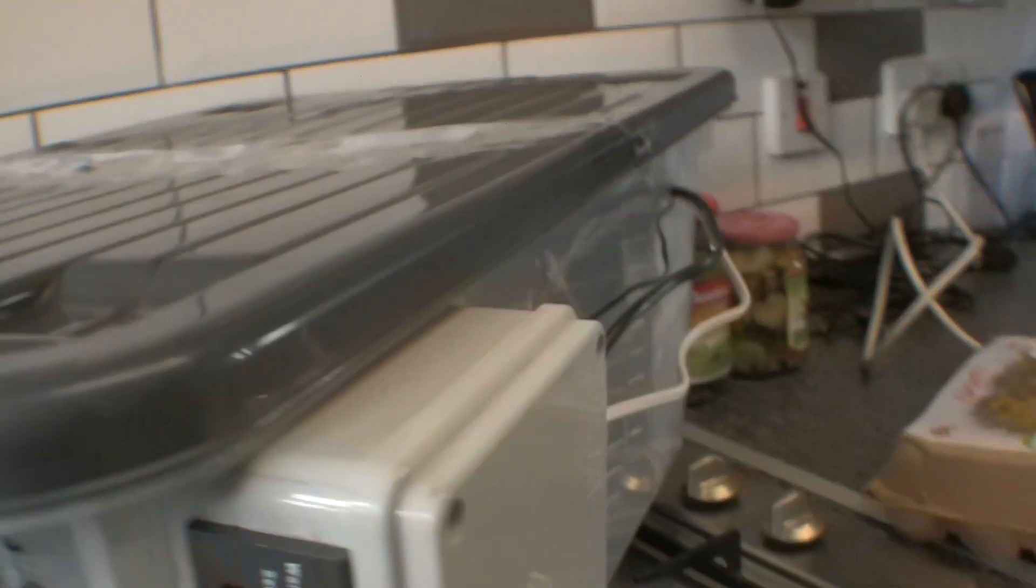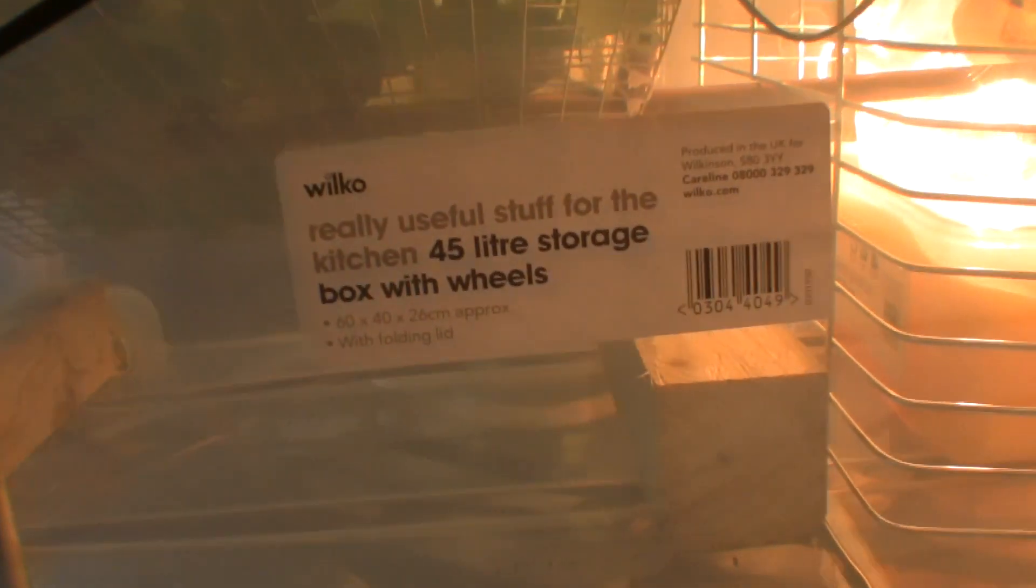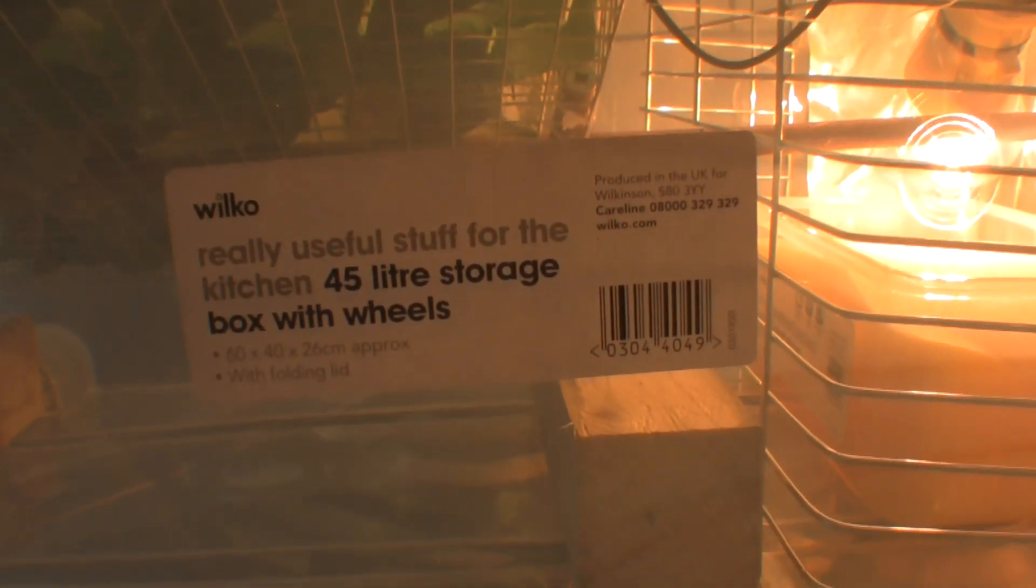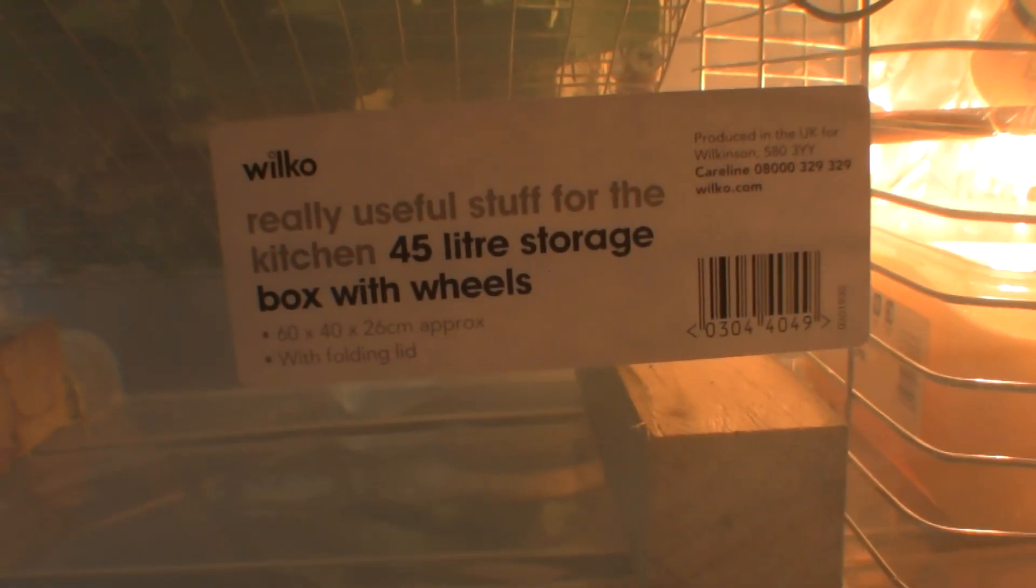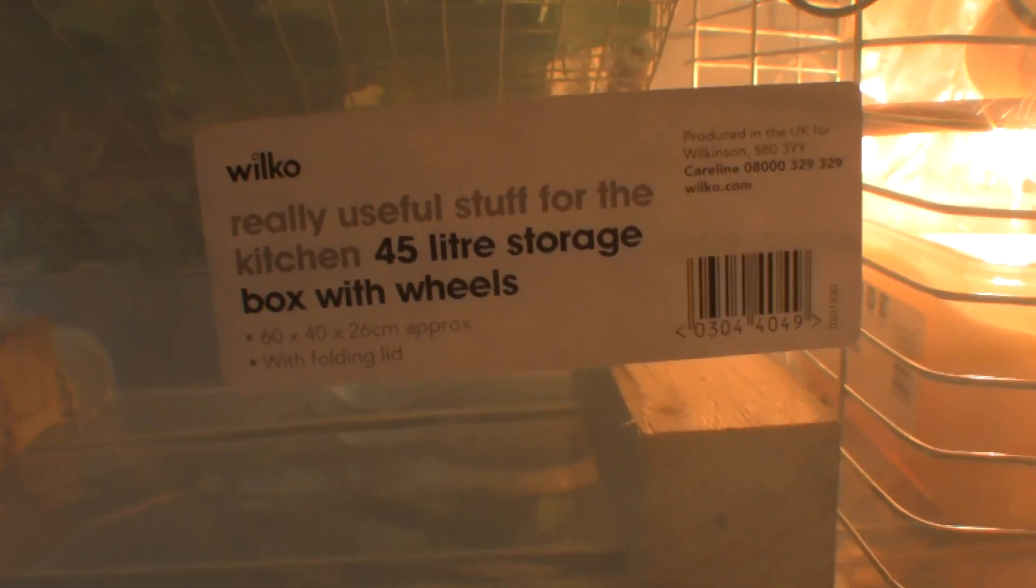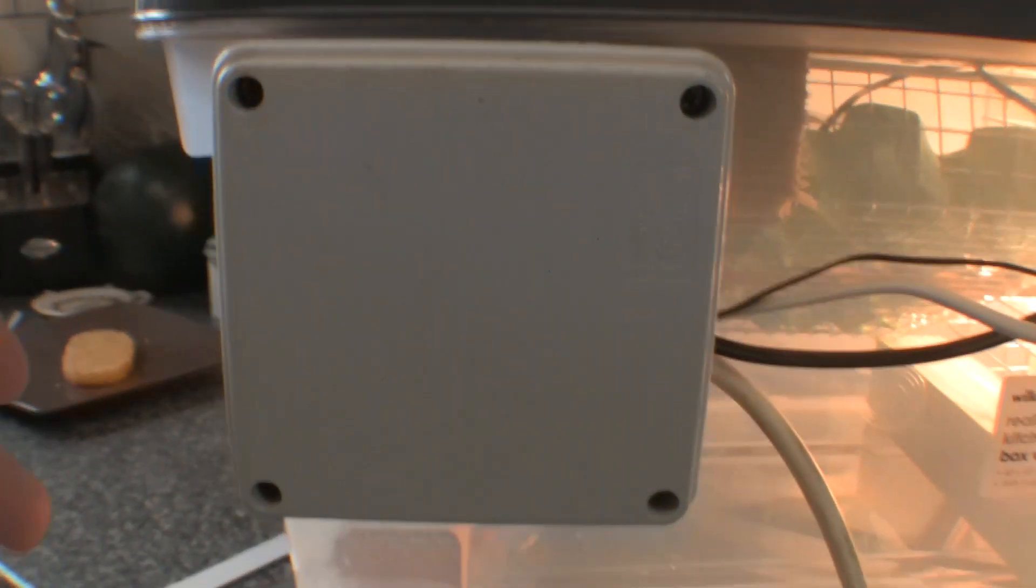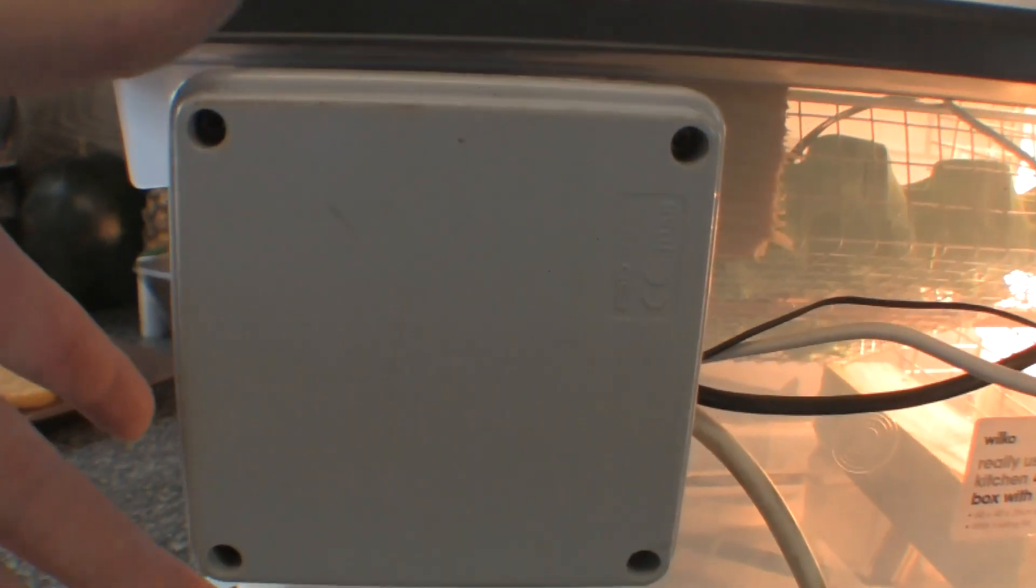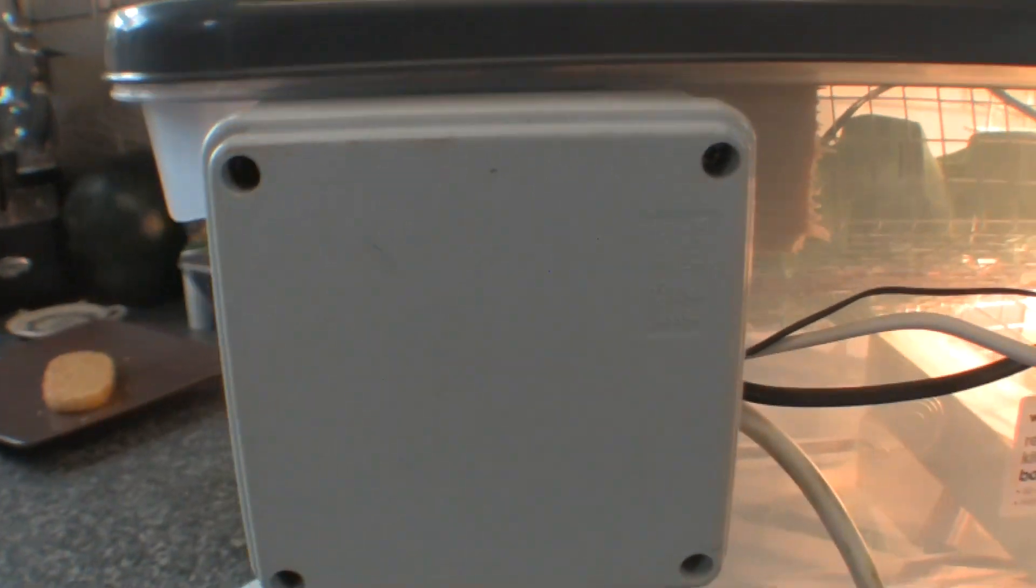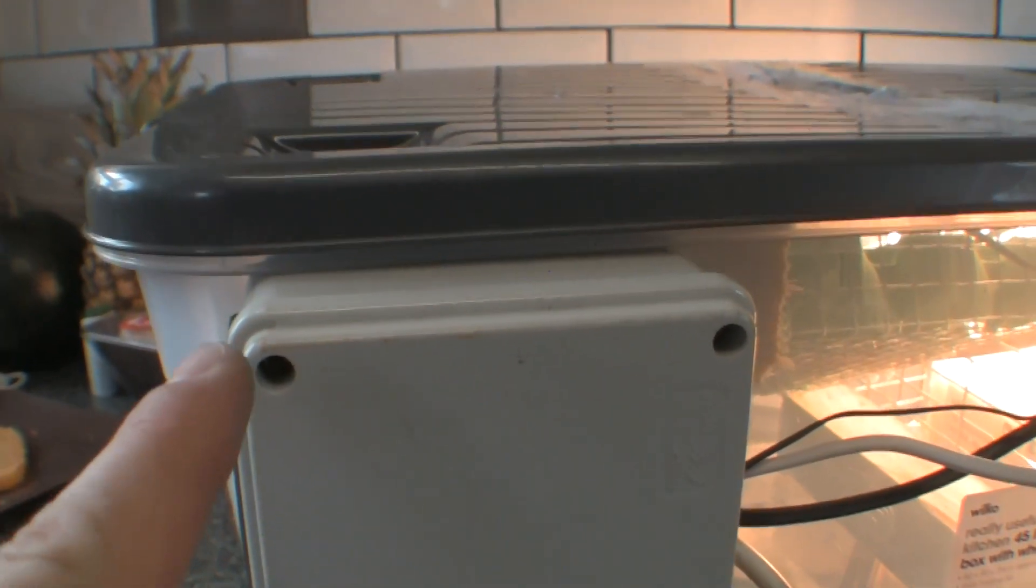Basically all it is guys, we have a Tupperware box there. You can see exactly the one, that's the one that we bought from Wilkinson's: 60 by 40 by 26 with a folding lid, 45 litre storage box. Then we've got a little, I think it's five inch 120 centimeter square project box to house all the components.